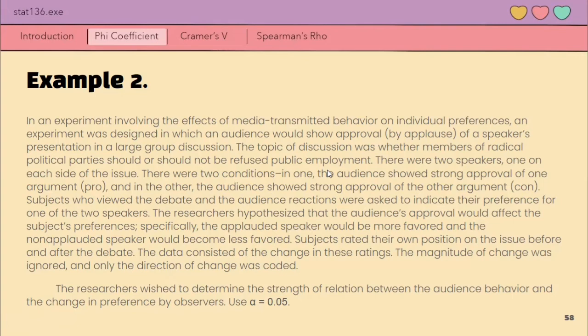In one, the audience showed strong approval of one argument, the pro, and in the other, the audience showed strong approval of the other argument, the con. Subjects reviewed the debate and the audience's reactions were asked to indicate their preference for one of the two speakers. The researchers hypothesized that the audience's approval would affect the subject's preferences. Specifically, the applauded speaker would be more favored and the non-applauded speaker would become less favored.